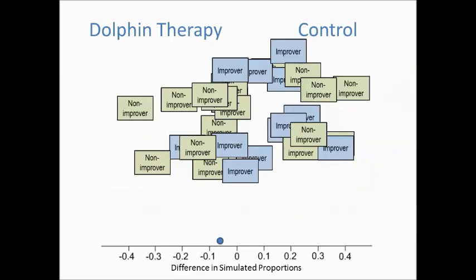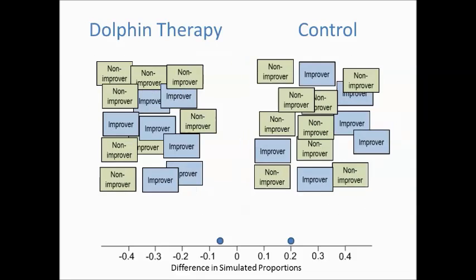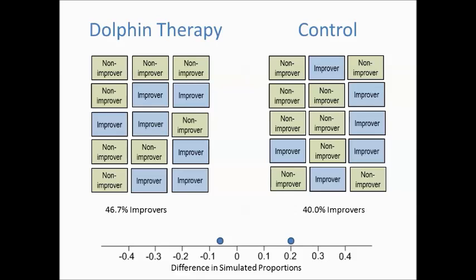Now, let's repeat this process. This time we got 8 improvers, or 53.3% in the dolphin therapy group, and 5 improvers, or 33.3% in the control group. This gives us a difference in proportions of .2, and we will add this dot to our dot plot of could have been values. We repeat this process again. This time we find that 7 improvers, or 46.7%, end up in the dolphin therapy group, and 6 improvers, or 40%, end up in the control group. This gives us a difference in proportions of .067, and we will add this dot to our dot plot.